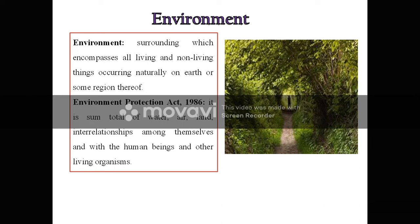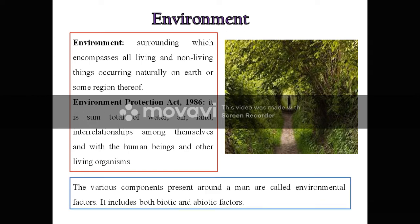According to the Environment Protection Act 1986, environment is the sum total of water, air, land, and the interrelationships among themselves and with human beings and other living organisms. The various components present around a man are called environmental factors, and these include both abiotic as well as biotic factors.